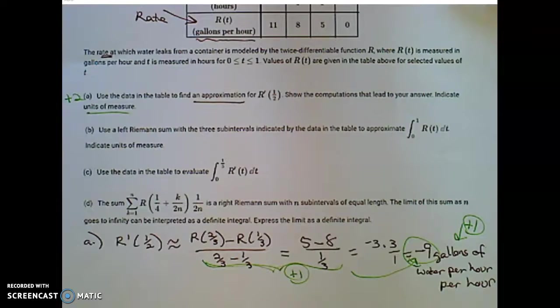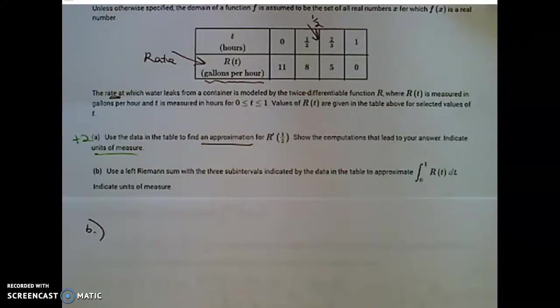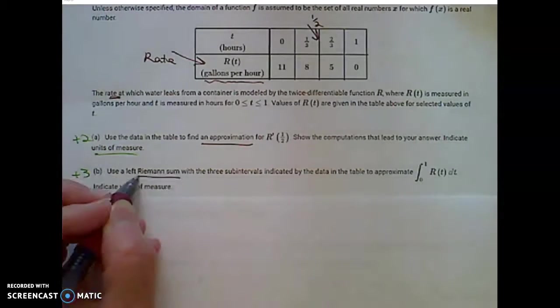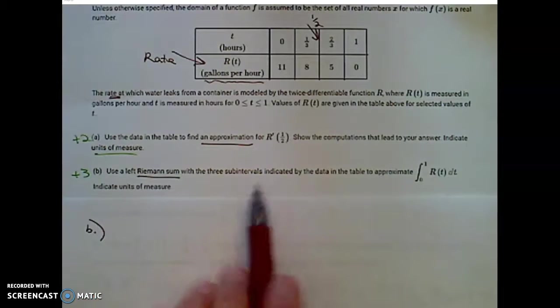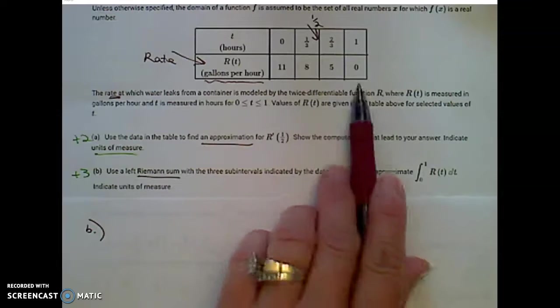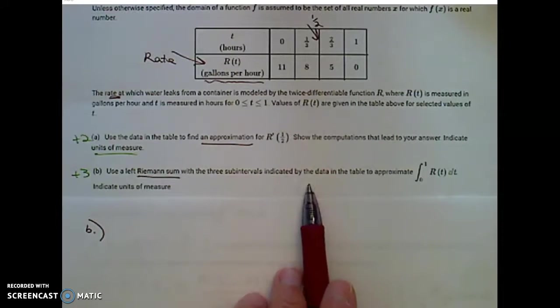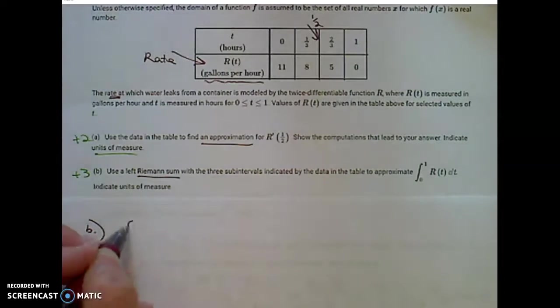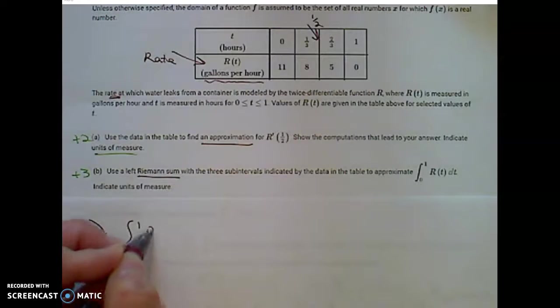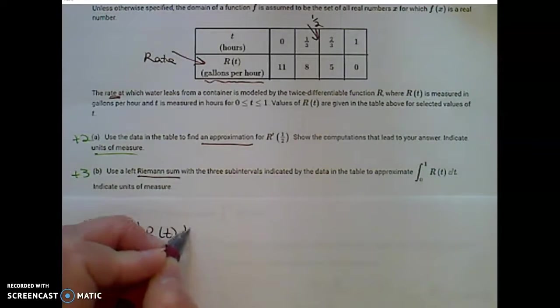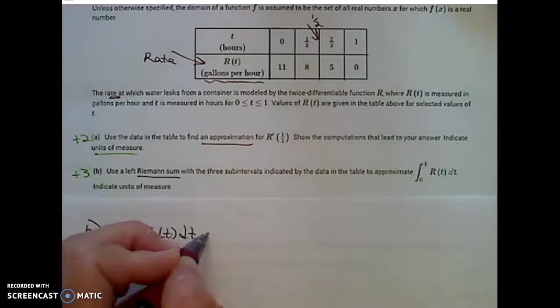Carefully read part B. In part B, and this is a big 3 points, use the left Riemann sum with 3 subintervals, 1, 2, 3, indicated by the data in the table to approximate the integral from 0 to 1 of that function R of t dt.